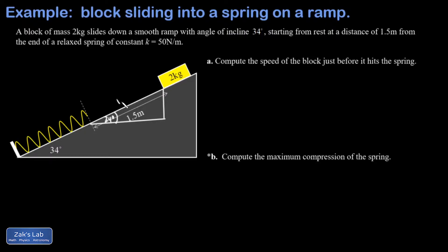The hypotenuse is one and a half meters and that means the length of this vertical side is 1.5 sine of 34. I'll go ahead and get a decimal approximation on that and it comes out to 0.839 meters.